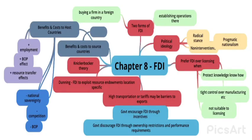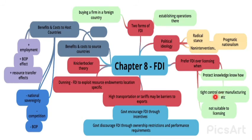Here is a mind map on this whole topic. There are two forms of FDI: establishing operations in a foreign country and buying a firm there. The political ideologies are the radical stance, non-intervention, and pragmatic nationalism. FDI is preferred over licensing when protecting knowledge, maintaining tight control over manufacturing, or when licensing is not suitable. Benefits and costs to source countries include employment, resource transfer effects, and national sovereignty, competition, and balance of payments.